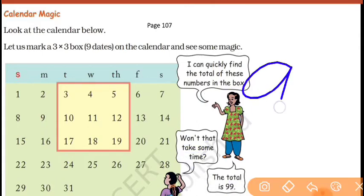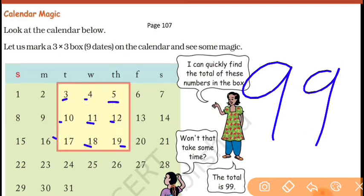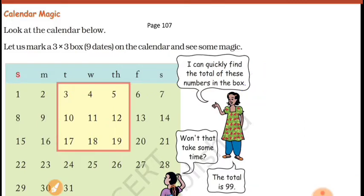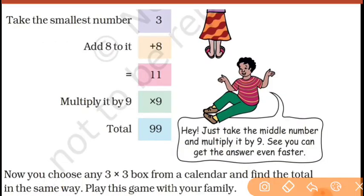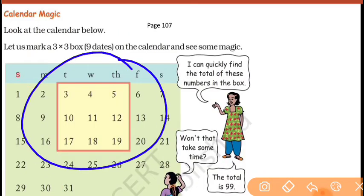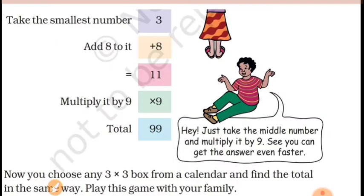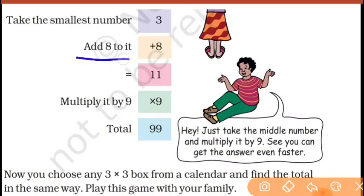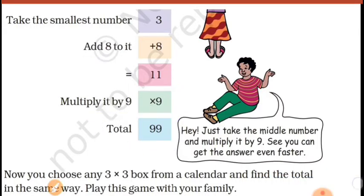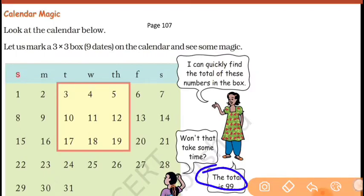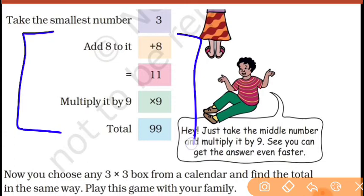Lekin aapko 99 kaise mila? Aapne saare 9 numbers ko plus karke 99 pata kiya hoga. But there is a short trick: first, take the smallest number in the box — that is 3. Add 8 to it: 3 plus 8 is 11. And then multiply it by 9 — 11 times 9 equals 99. Same to same — add karne par bhi 99, aur yeh magic se bhi 99!